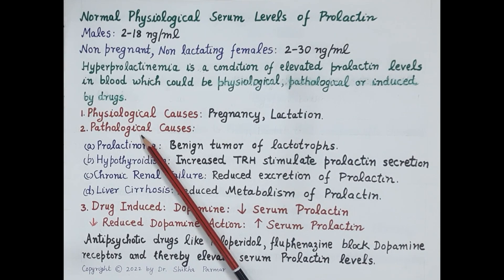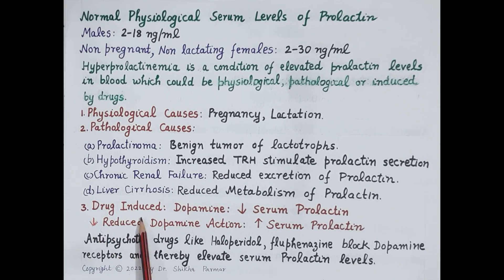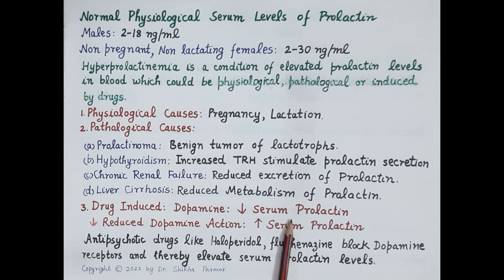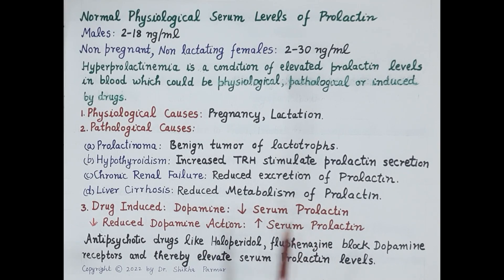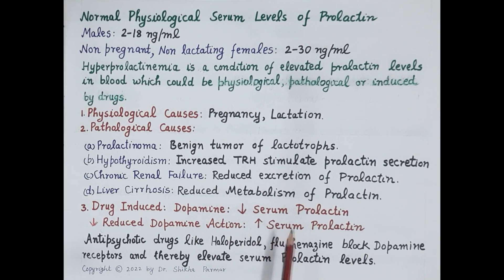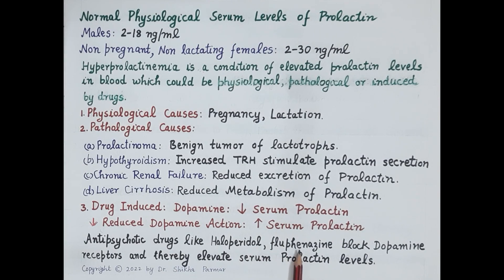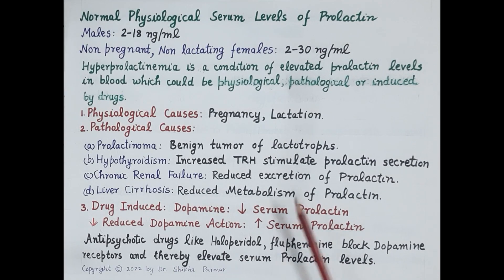Now let's understand causes of drug-induced hyperprolactinemia. Dopamine inhibits release of prolactin, so dopamine reduces serum prolactin levels. If a drug blocks dopamine receptors or blocks the action of dopamine, it will increase serum levels of prolactin. Antipsychotic drugs like haloperidol and fluphenazine block dopamine receptors, thereby blocking the action of dopamine and elevating serum prolactin levels.